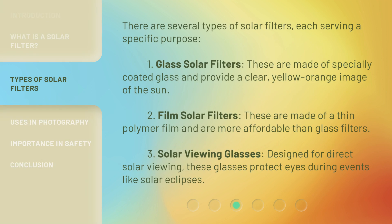There are several types of solar filters, each serving a specific purpose. First, Glass Solar Filters: these are made of specially coated glass and provide a clear, yellow-orange image of the sun. Second, Film Solar Filters: these are made of a thin polymer film and are more affordable than glass filters. Third, Solar Viewing Glasses: designed for direct solar viewing, these glasses protect eyes during events like solar eclipses.